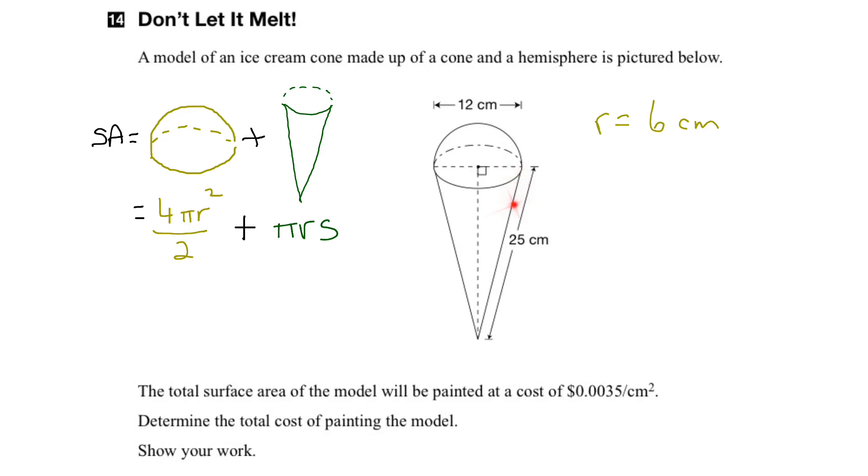And s, the slant height, is given to us as 25 cm. So s equals 25 cm. So we can substitute these values here into our equation and find the surface area.